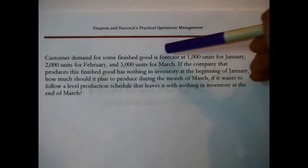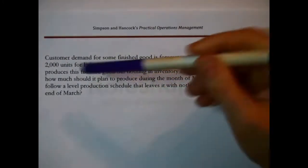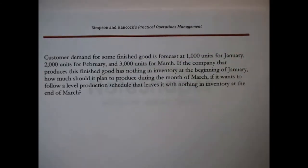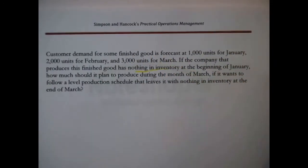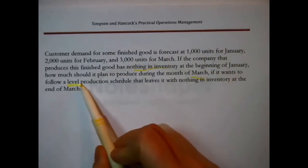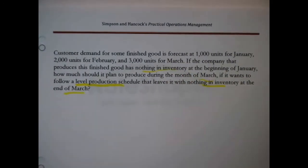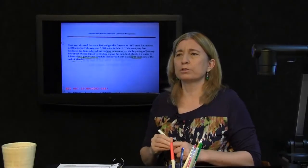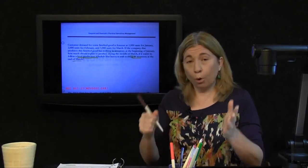Customer demand for some finished good is forecast at 1,000 units for January, 2,000 for February, and 3,000 for March. If the company produces this finished good with nothing in inventory, we're already accumulating all these facts. There was the forecast, they have nothing in inventory. How much should it plan to produce in the month of March if it were to follow a level schedule with nothing in inventory at the end of March? What I recommend is organize it into a table. Always works better for me.